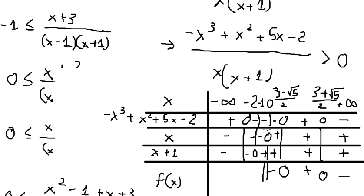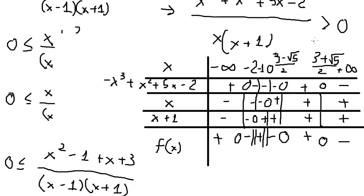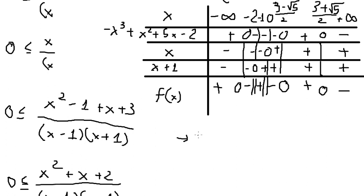Negative with negative gives positive; positive with positive gives positive. The question asks us to find where the expression is greater than zero, meaning we concentrate on the positive regions — this one, this one, and this one. Here is the final answer.